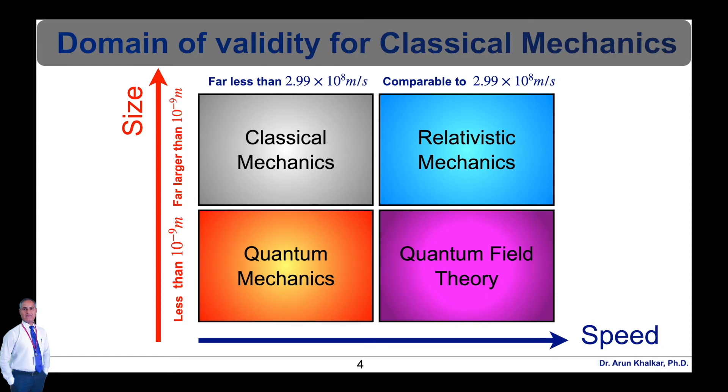Many branches of classical mechanics are simplifications or approximations of more accurate forms. Two of the most accurate being general relativity and relativistic statistical mechanics. Geometric optics is an approximation to the quantum theory of light and does not have a superior classical form.